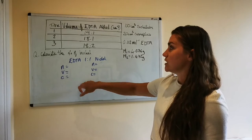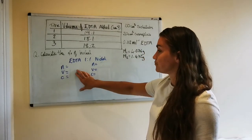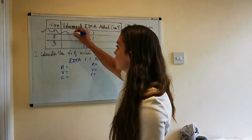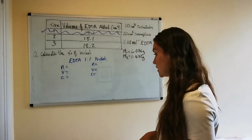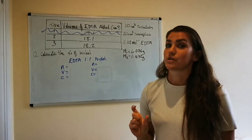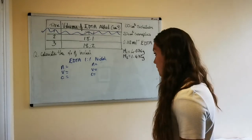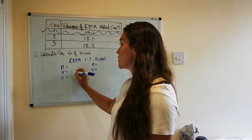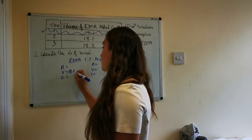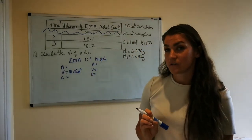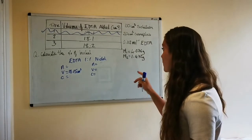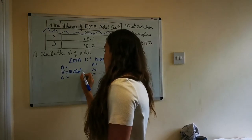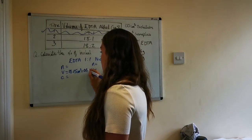So if we look at the EDTA because that's what we're titrating with, so that's our standard solution. The volume is going to come from the results table. Now you need to remember you always ignore the first titration because that's the rough, so that's never taken into account. And the only results you'll then use will be your concordant ones, so those are the ones that are within 0.2 cm³. So the two concordant results are these two, so you take the average of those which means the volume of EDTA will be 18.15 cm³. And then what you have to remember is that you need to convert that into liters because the concentration of the EDTA is in moles per liter.